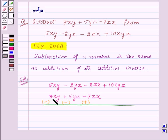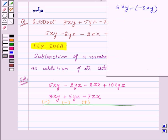So, subtracting 3xy from 5xy is same as adding minus 3xy to 5xy. 5xy plus minus 3xy is equal to 5xy minus 3xy which is equal to 2xy as 5 minus 3 is 2. So, we will get 2xy.